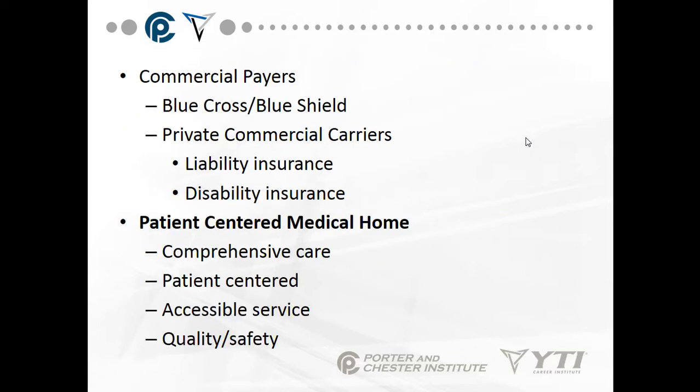Commercial payers include Blue Cross, Blue Shield, and United Healthcare. Private commercial carriers carry liability insurance and disability insurance as well as health insurance. Health insurance started with life insurance companies — Blue Cross and Blue Shield were created as a health insurance company, while Aetna originally offered life insurance before entering the health insurance market.